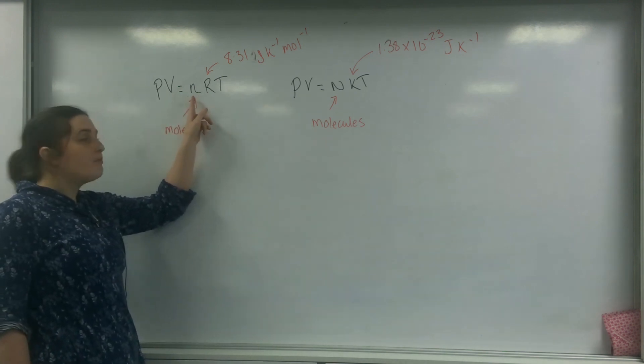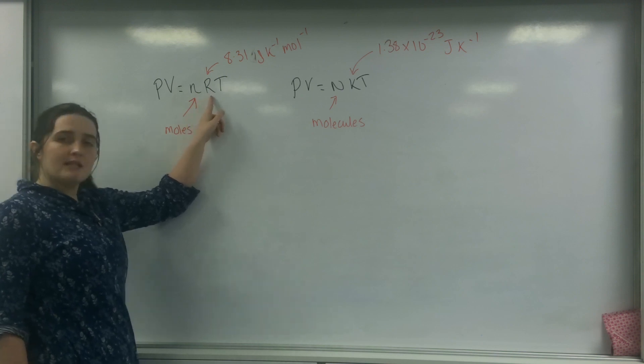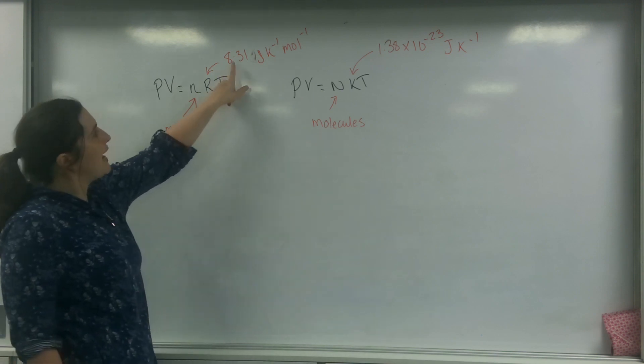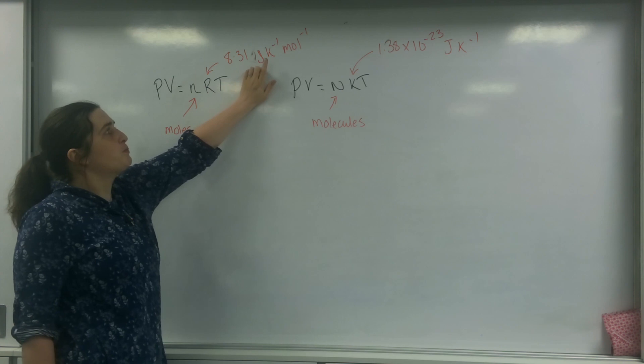So these two laws here, we have PV equals nRT. In this formula, this is the number of moles. This R represents the universal gas constant which is 8.31 joules per kilogram per mole.